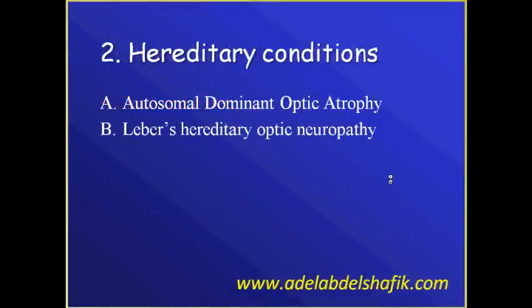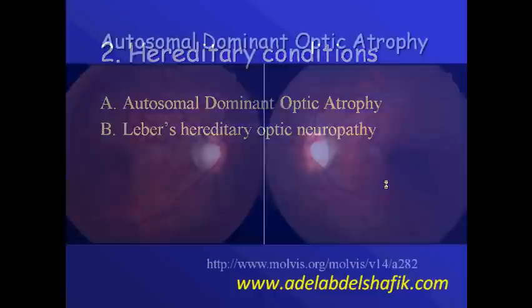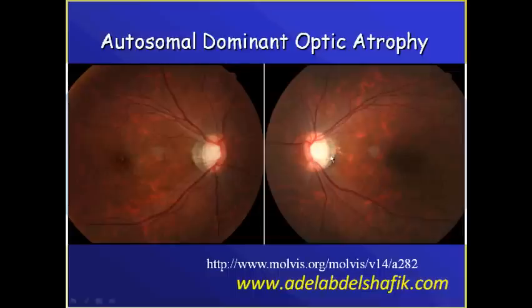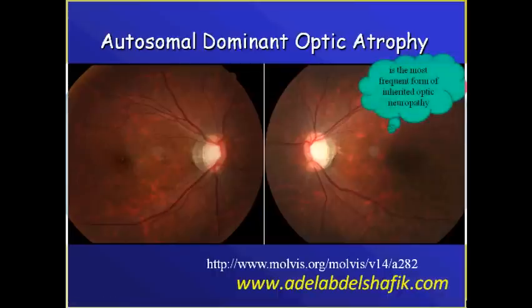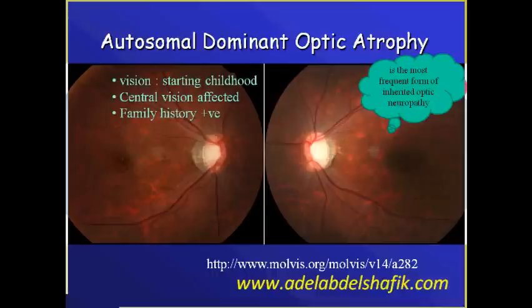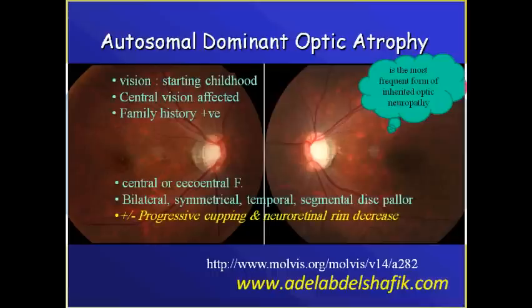A second group is hereditary conditions, like autosomal dominant optic atrophy or Leber's hereditary optic neuropathy. In this example, you notice that we get enlargement of the cup. This is the most frequent form of inherited optic neuropathy. Visual affection starts in childhood and there is affection of the central field of vision, which is not characteristic of glaucoma. Family history is positive, so we have central or centrocecal field changes, and the cupping may increase over time.